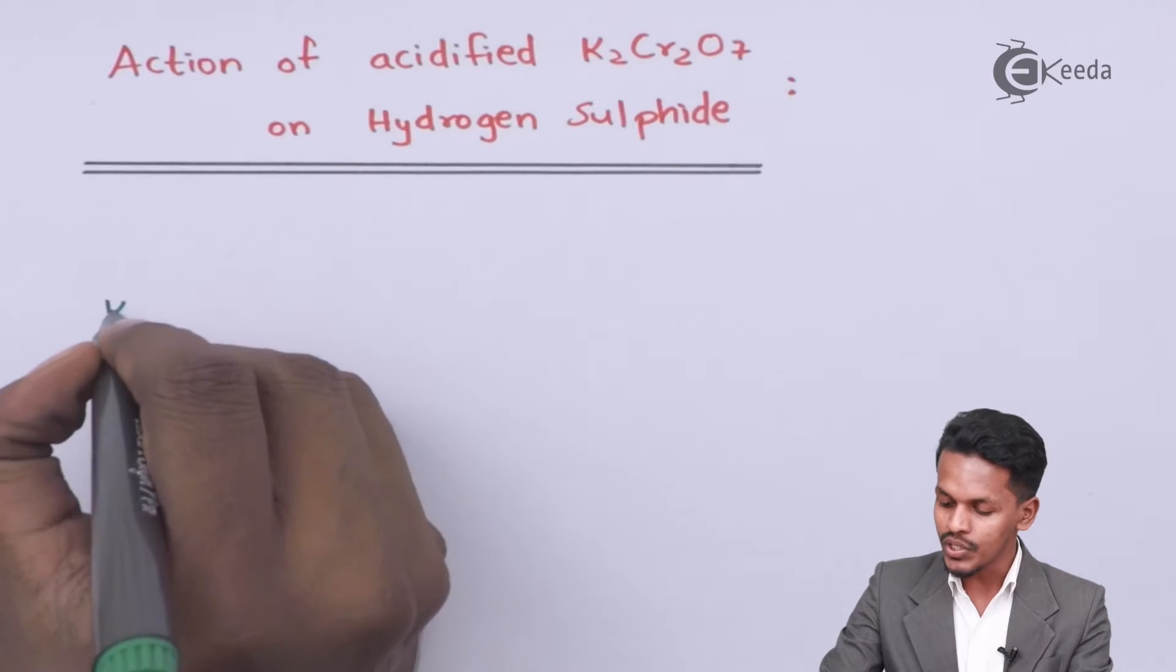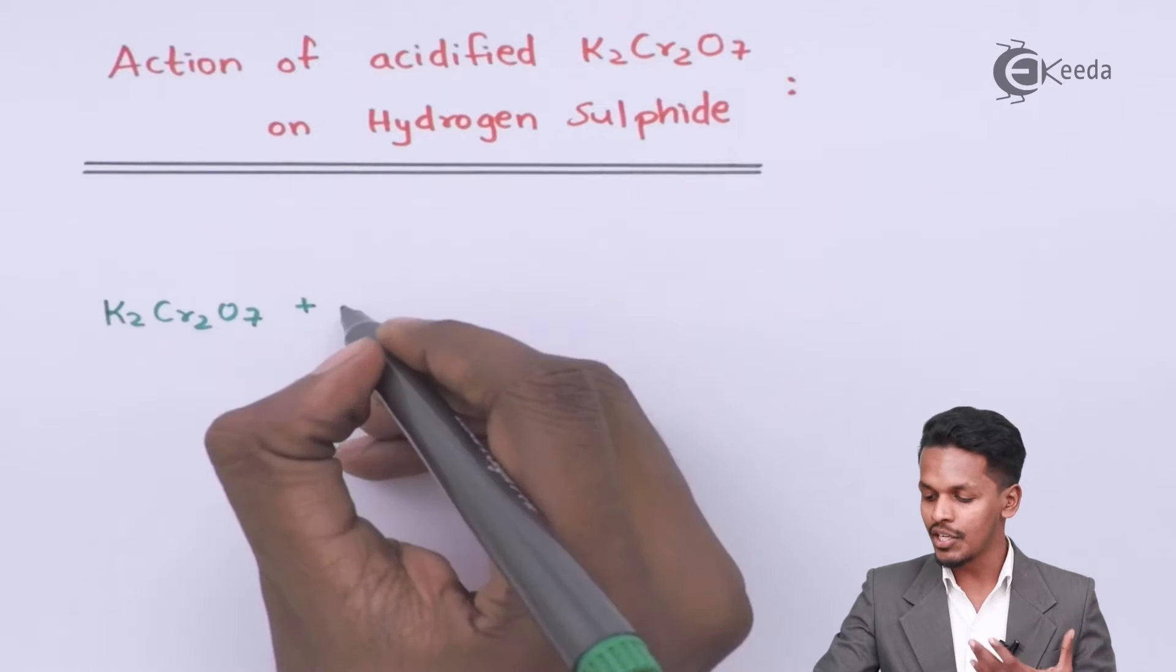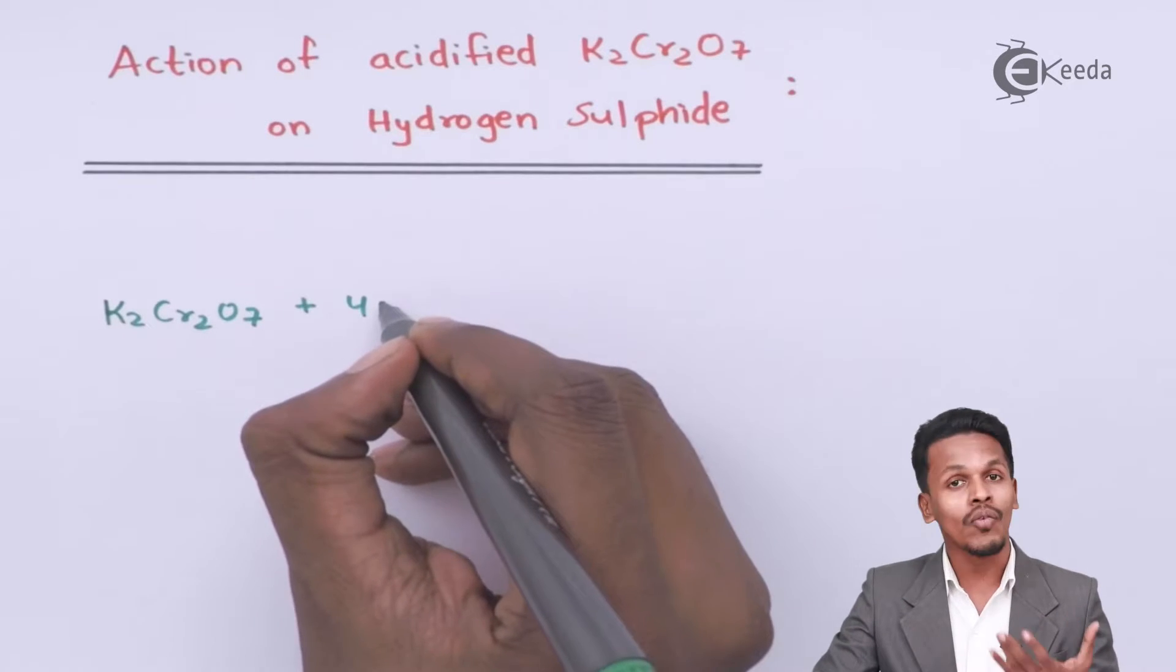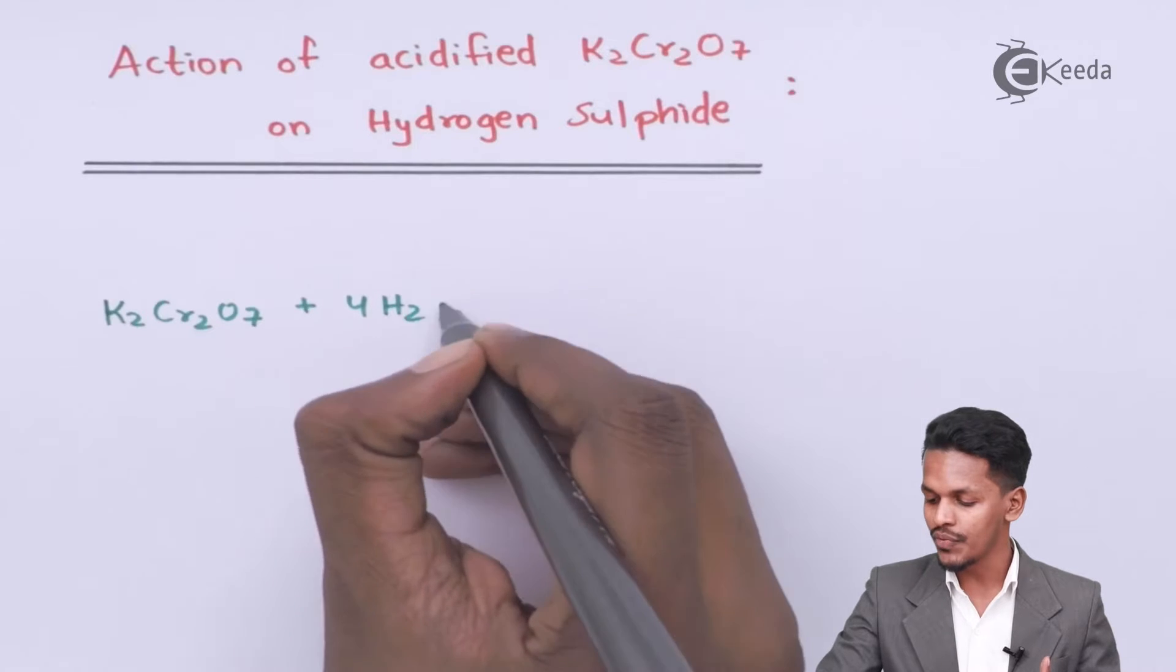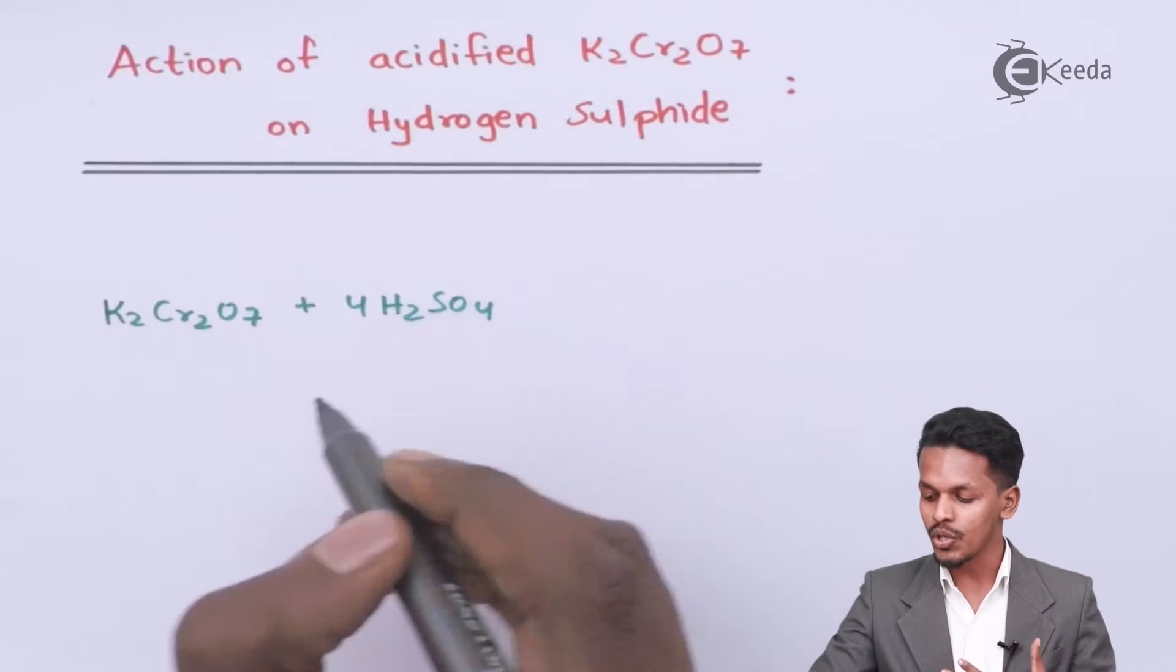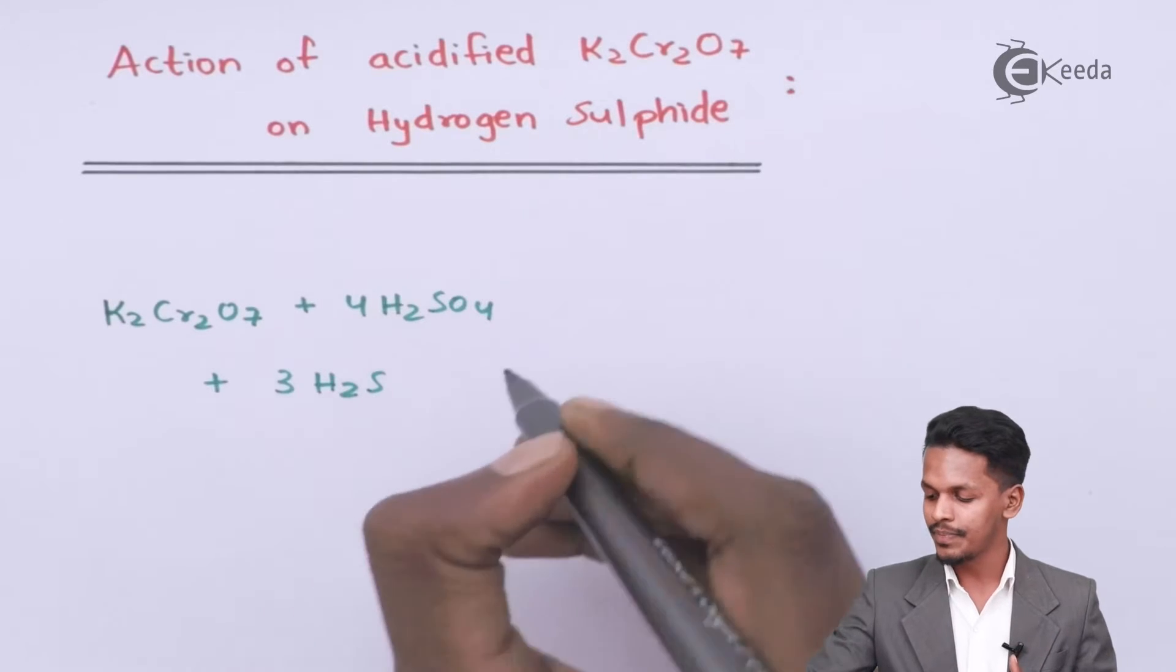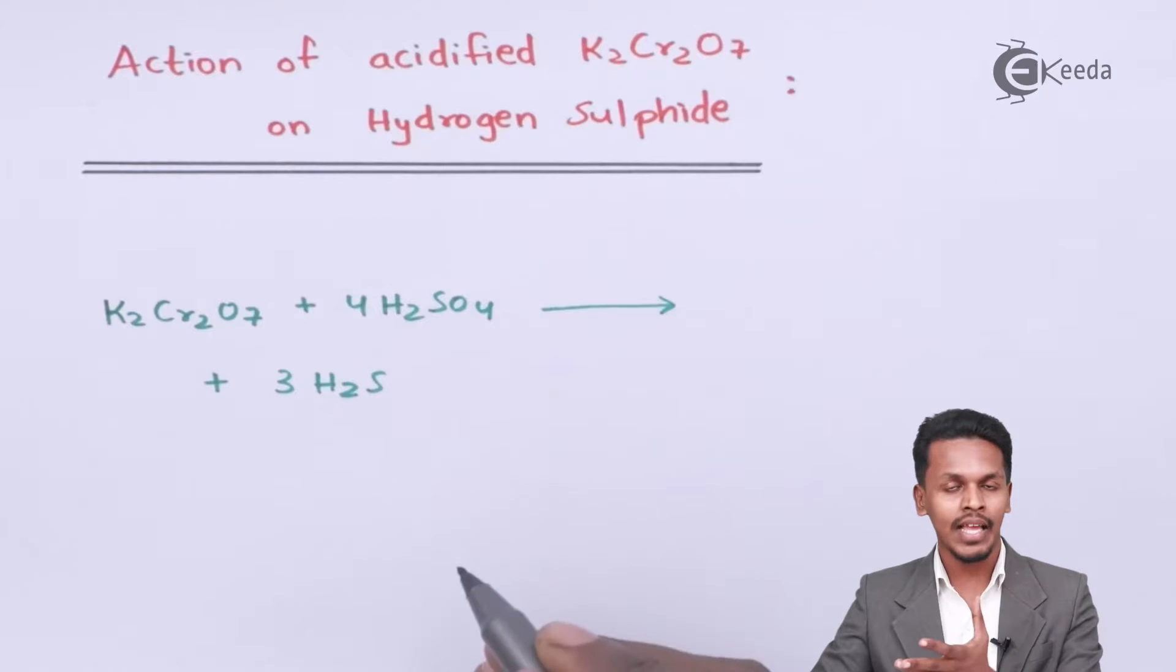So in this case K2Cr2O7, obviously we have to make it in an acidic medium. Therefore we are dissolving it in 4 moles of H2SO4. So whenever K2Cr2O7 is reacted with 4 moles of H2SO4 along with 3 moles of H2S, this is the balanced reaction.